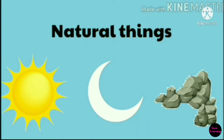Before we end our lesson for today, we will have a short recap. Living things are things that have life. Non-living things are things that do not have life. Living things like animals need food, air, and water, while plants need water, air, and sunlight. Living things can move, grow, respond to change, and reproduce.